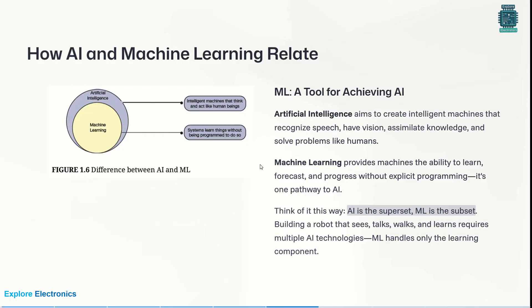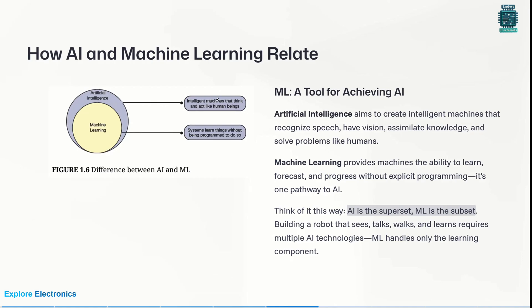How do AI and machine learning relate? In this diagram, you can see artificial intelligence as the outer layer, and inside it, machine learning is one part. Artificial intelligence is like an ocean where machine learning is a part of it. AI refers to machines that think and act like human beings; machine learning means the system will learn without being explicitly programmed to do so.